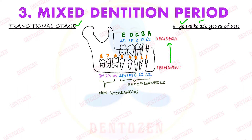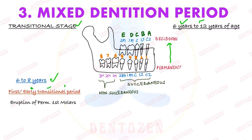The first step is also called the early transitional period, from 6 to 8 years of age. Two major events are happening here. First is the eruption of permanent first molars — depicted here by 6 — they are going to erupt in the mouth. Second is the eruption of permanent incisors, which are going to replace the deciduous incisors.